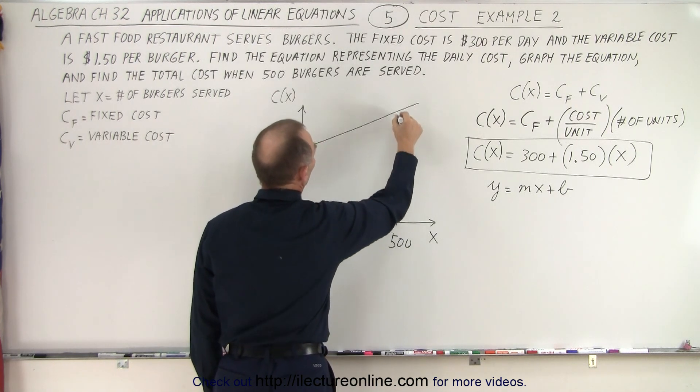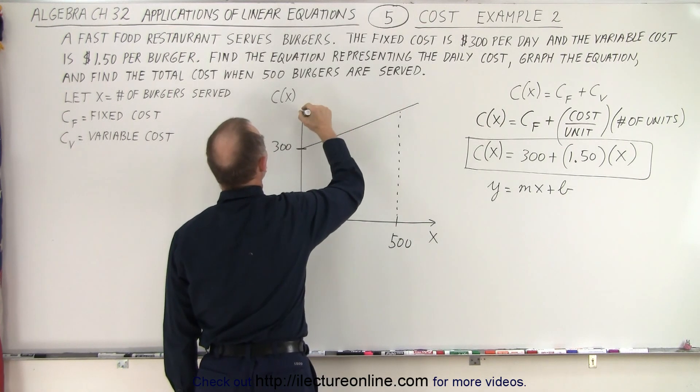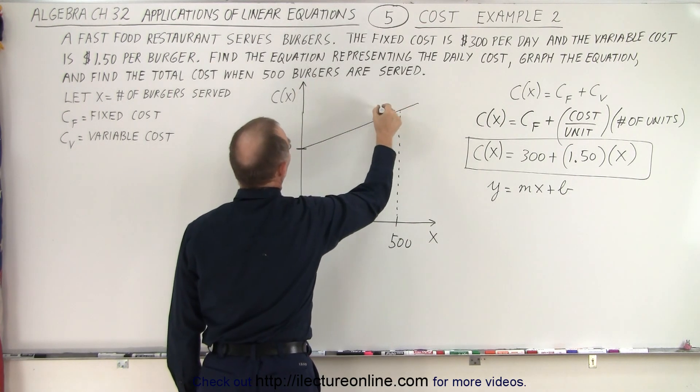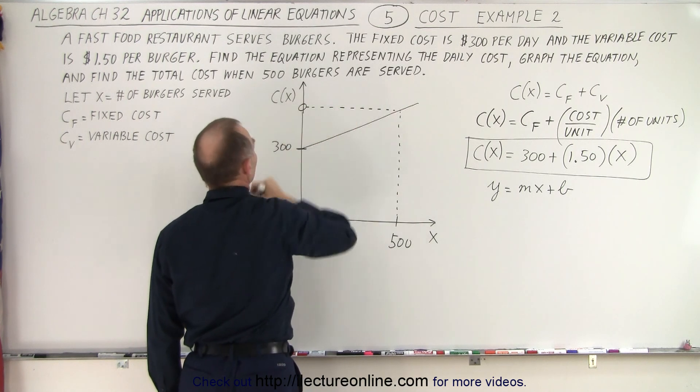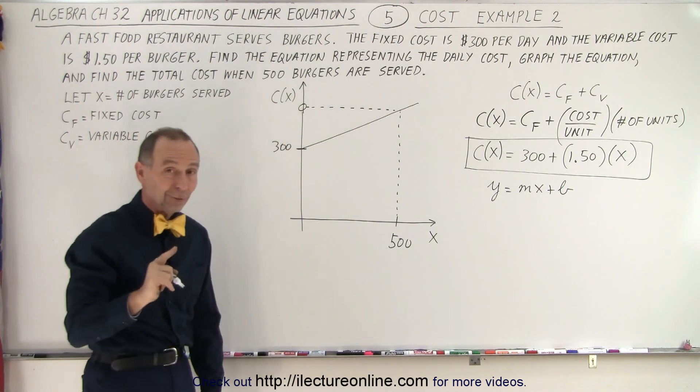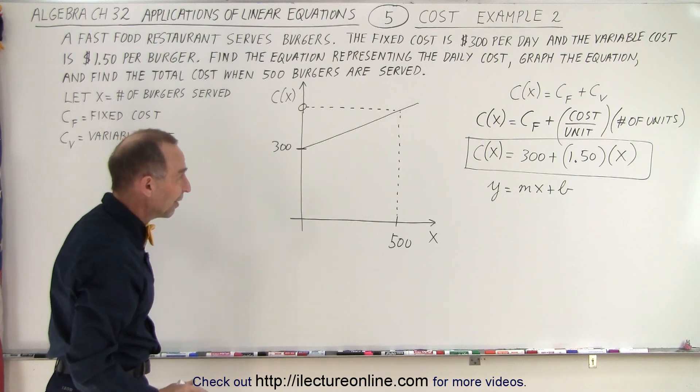And then of course at some point you will have reached the number of 500 burgers. And that means that the total cost, let me make this a little bit taller, there we go. You can see that the total cost would be right here. And so we have to figure out what that is, based upon the number of burgers being 500.